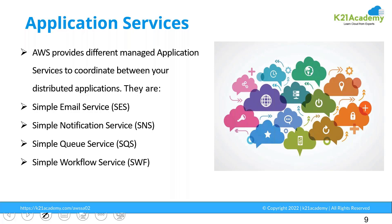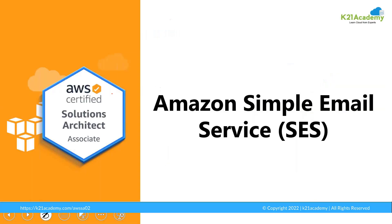I need some services to coordinate between these distributed applications where multiple modules need to communicate with each other. Amazon provides these services: SES, that is Simple Email Service; SNS, that is Simple Notification Service; SQS, that is Simple Queue Service; and Simple Workflow Service. These are the application services available from Amazon that help you work with distributed or decoupled environments.